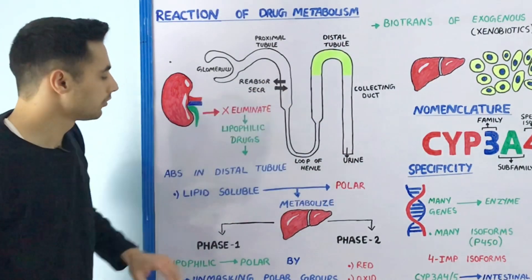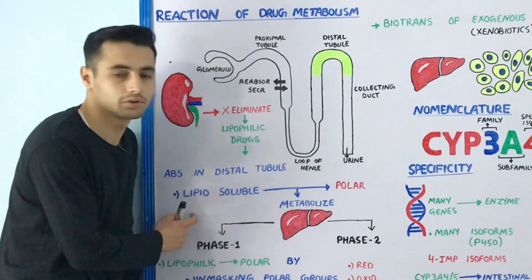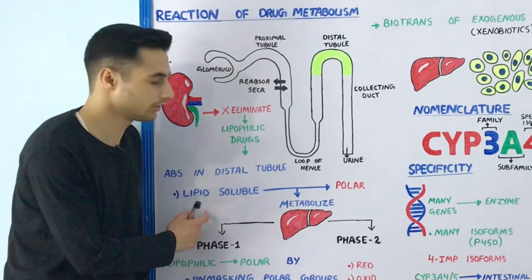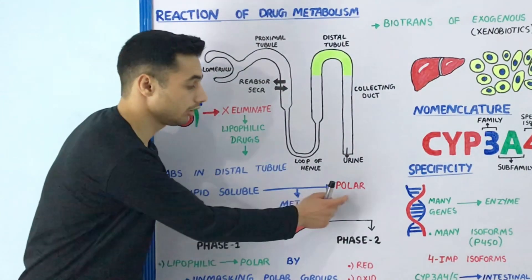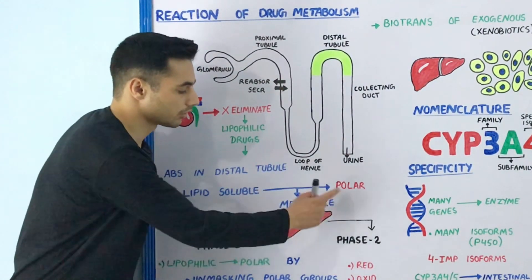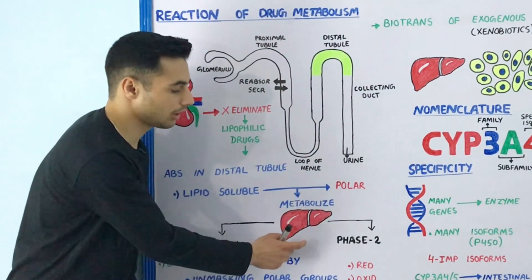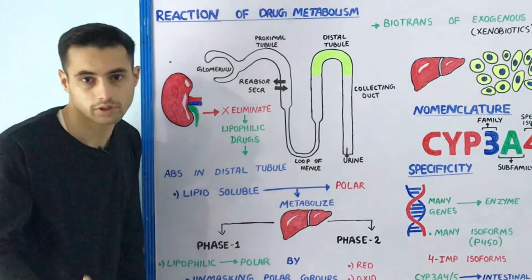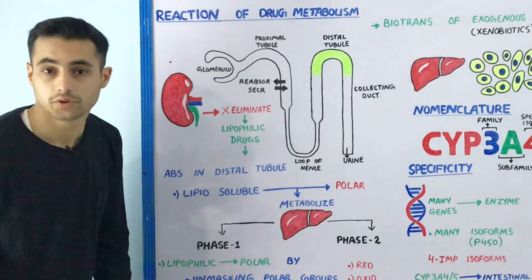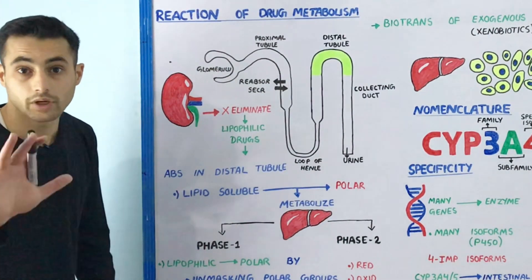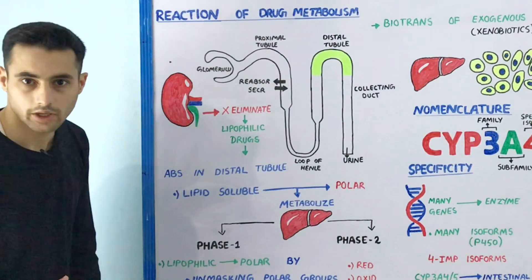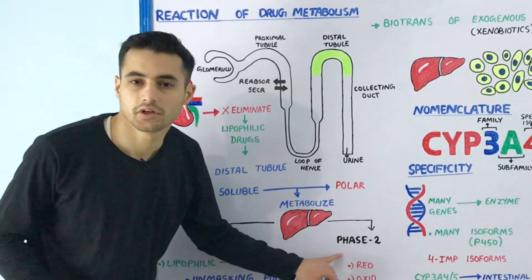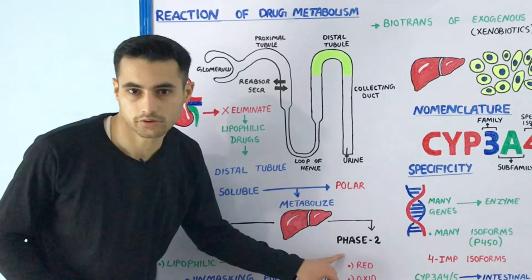So we have to convert lipid-soluble drugs or agents into polar forms, and this conversion happens in our liver. The liver metabolizes the drug and makes it water soluble by two main reactions: the phase one reactions and the phase two reactions.